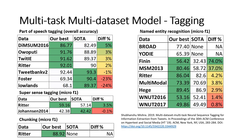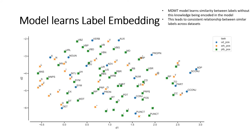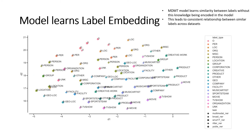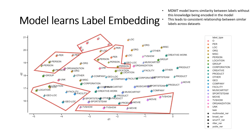chunking, and supersense tagging. For most of the tagging tasks, the model achieves close to state-of-the-art results. Additionally, the model also learns to cluster semantically similar labels from different datasets for a given task. This also extends to span detection tasks where the labels have a span position identifier.